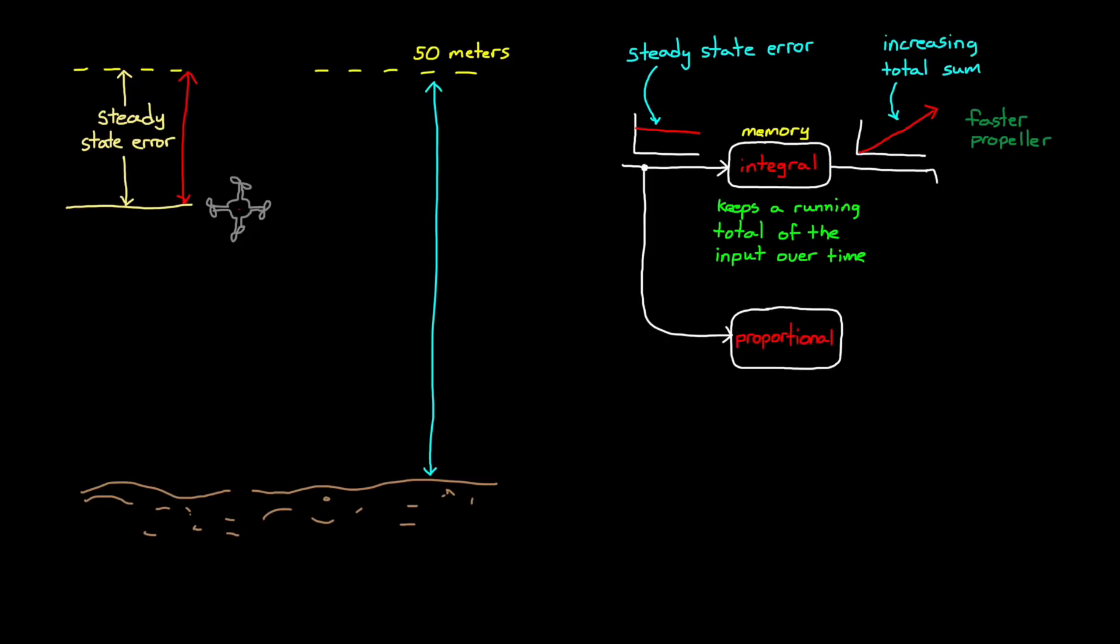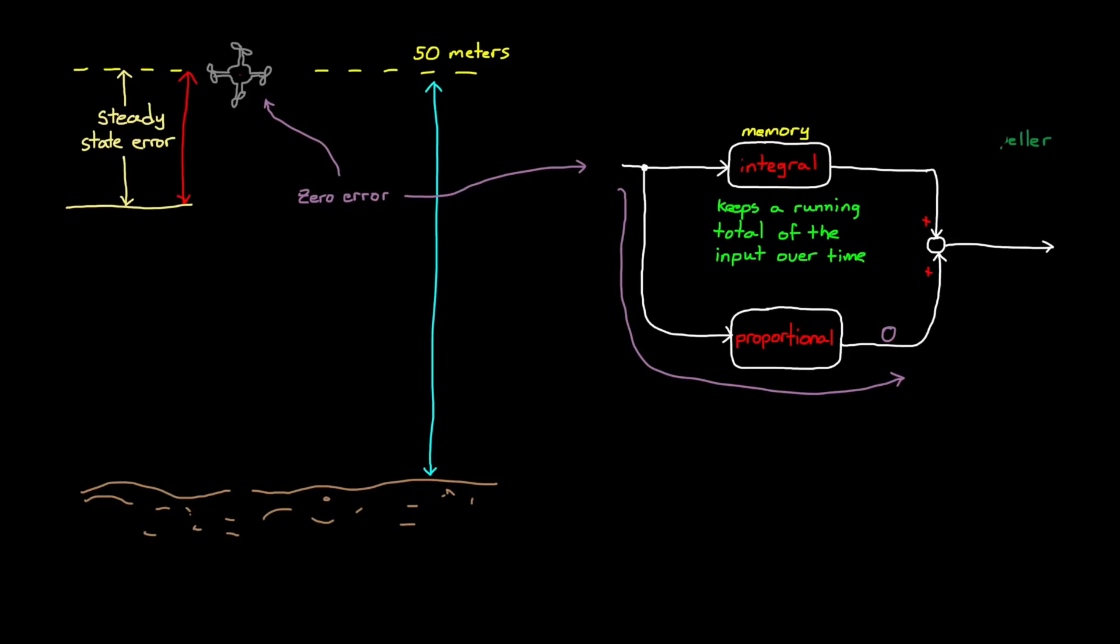These two paths, the proportional and the integral path, work with each other to drive the error down to zero. And with this controller, when the drone is hovering at the desired altitude of 50 meters, the proportional path is doing nothing, since the error is zero. But the integral path has been summing and subtracting values until it came to rest at 100 RPM. Remember, this is what we said was needed for the drone to hover. And that output from our integrator will not change, since the input to the integrator at this point is zero.